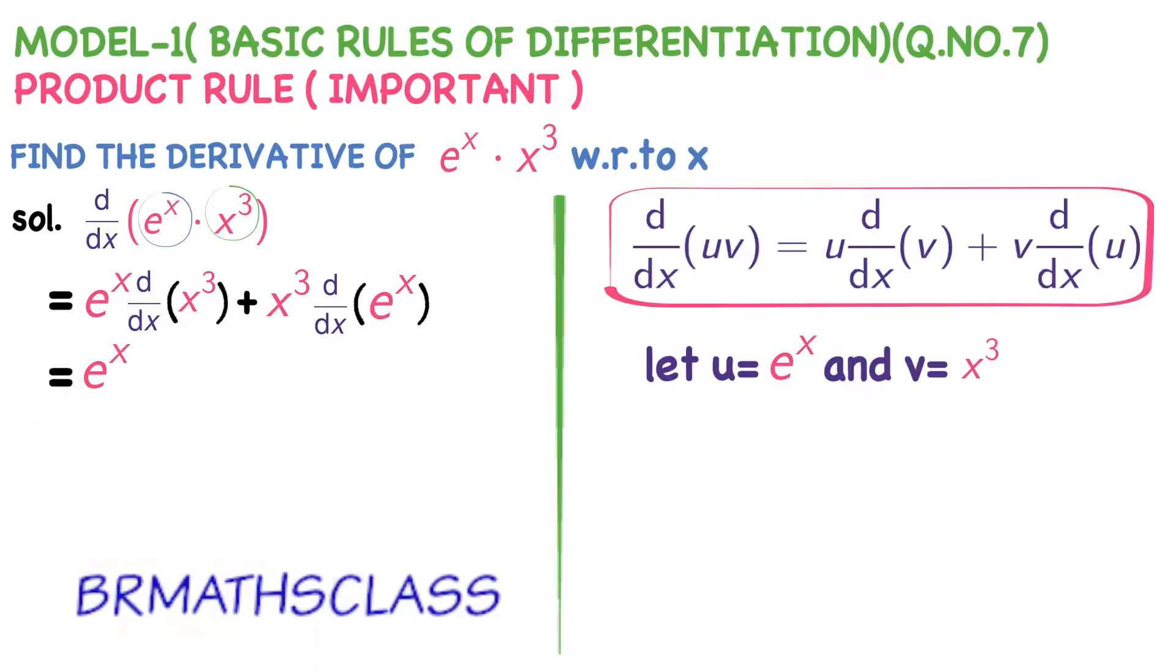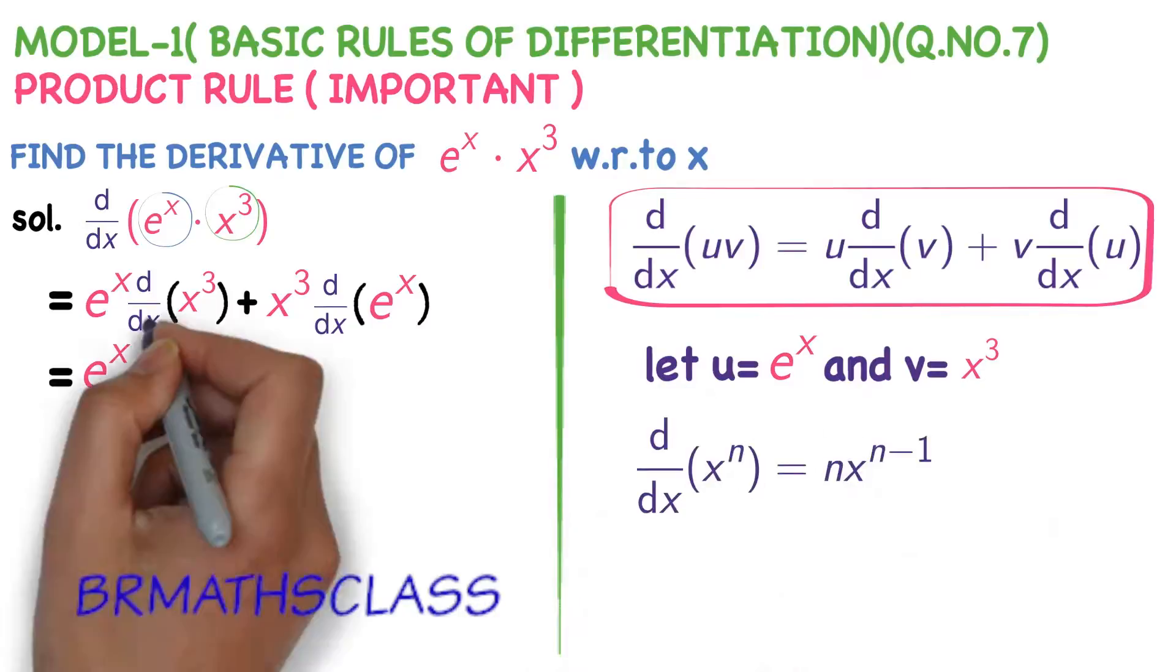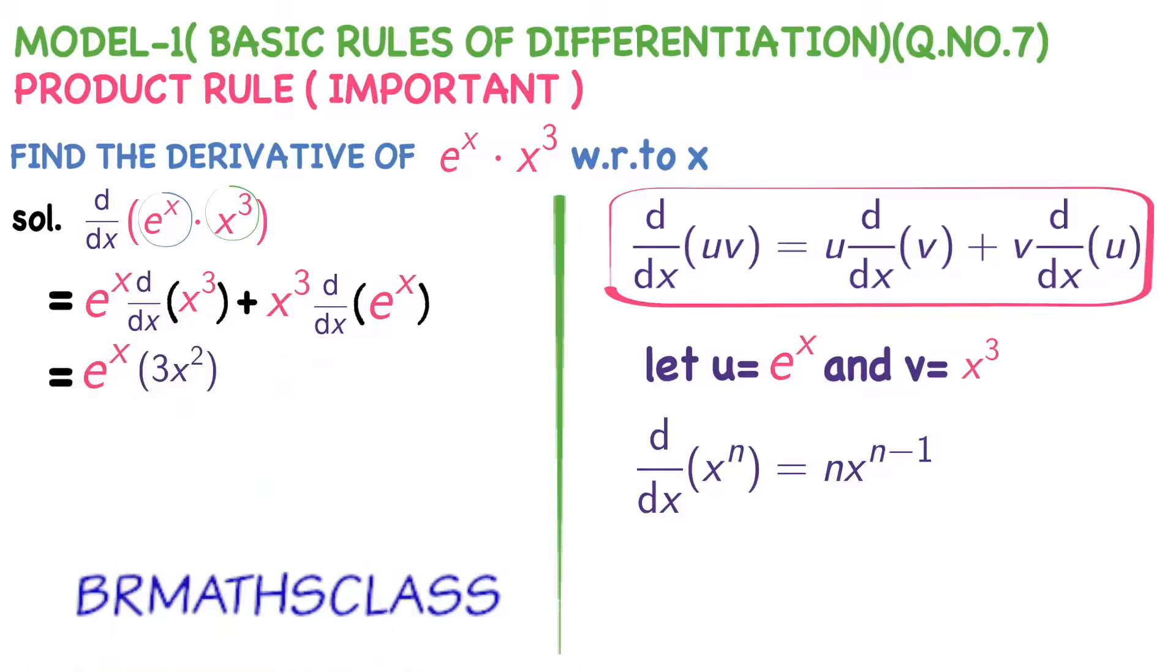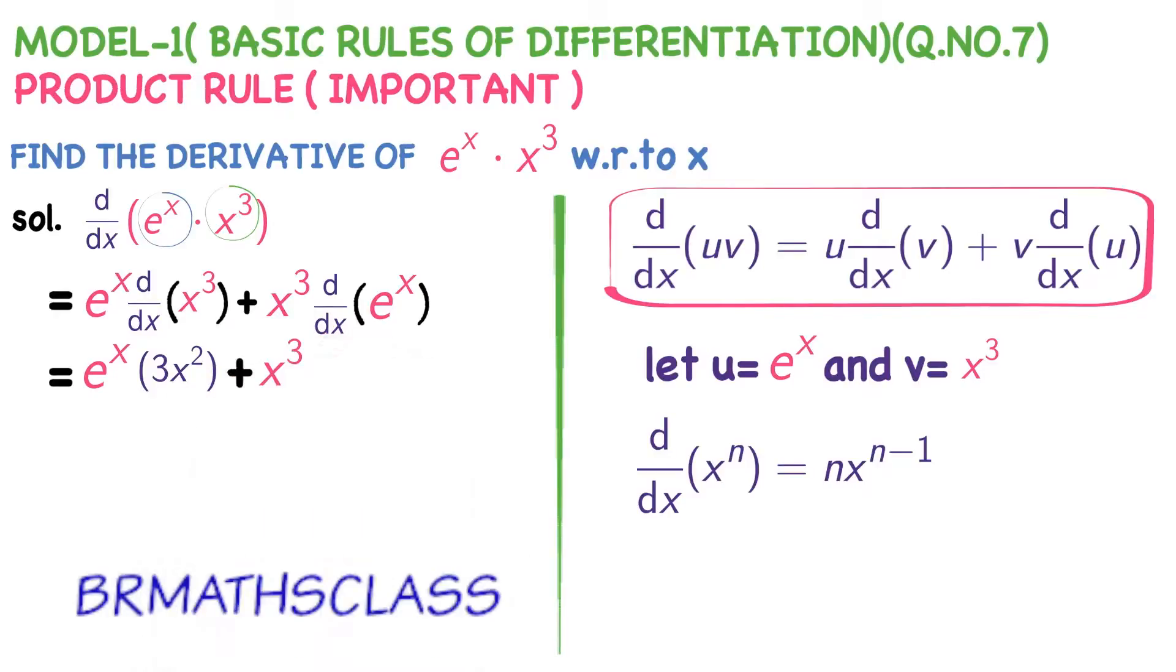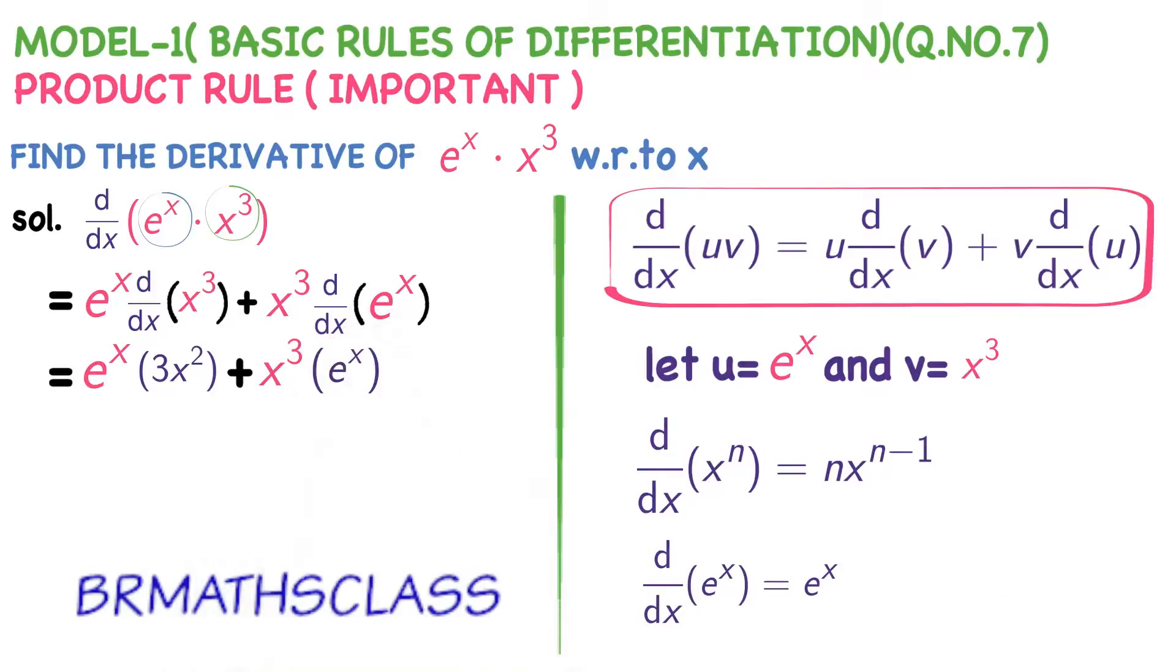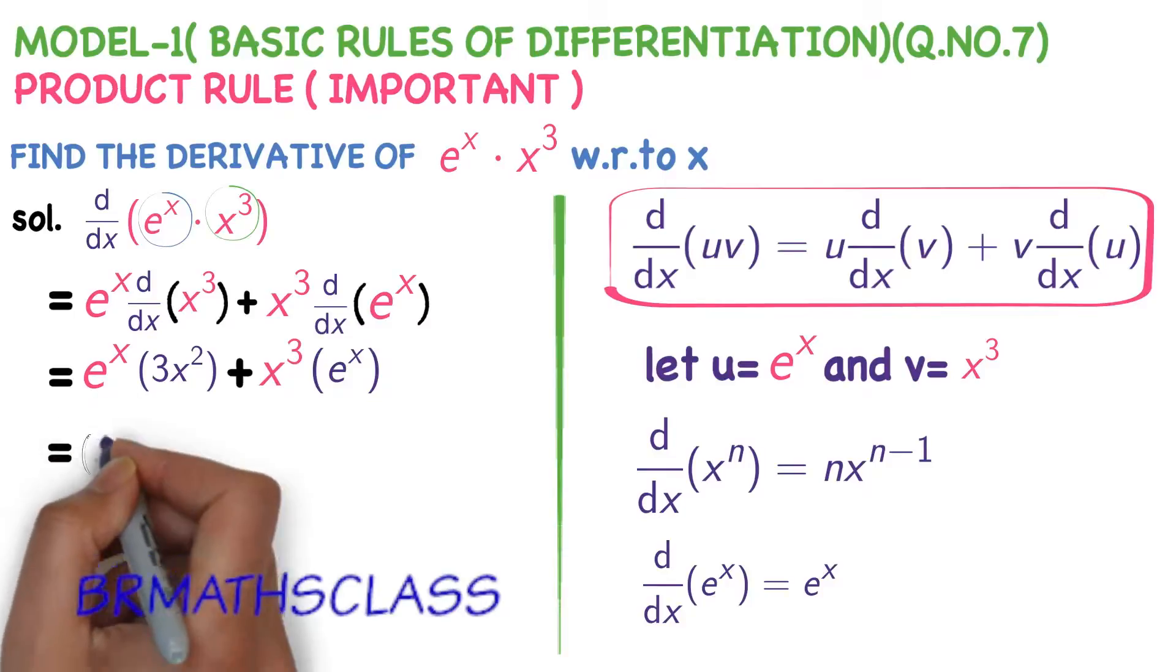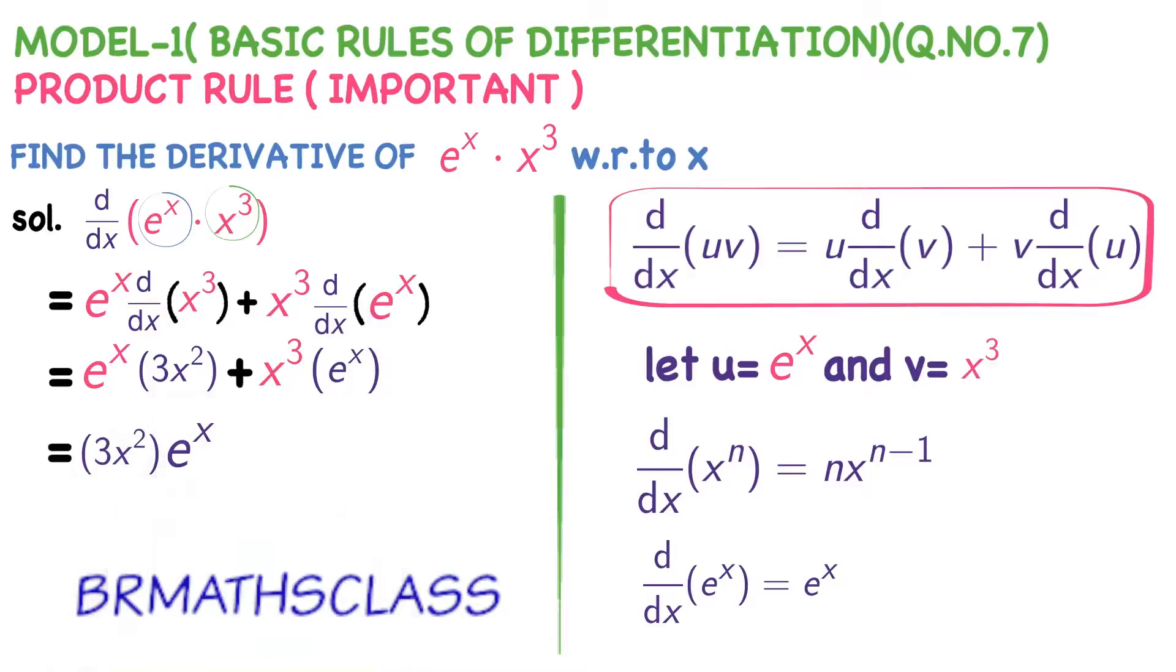Now, e power x, I will write it as it is. Derivative of x power n is n into x power n minus 1. So, what is derivative of x cube? We know this. 3x square plus x cube into derivative of e power x. Easiest formula in derivatives. Derivative of e power x is e power x only. I will write one more simplification step here.